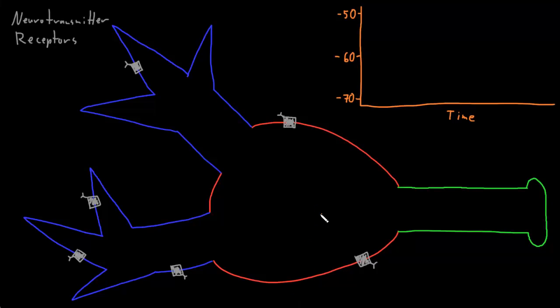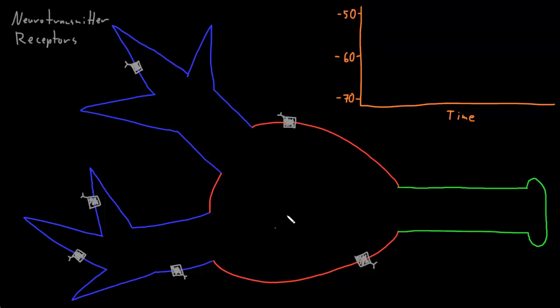In this video, I want to talk about how neuron graded potentials are created and why they decay with both time and distance. I've drawn a neuron with a soma in red, and I've blown up an axon in green, and I've blown up two large dendrites in blue.